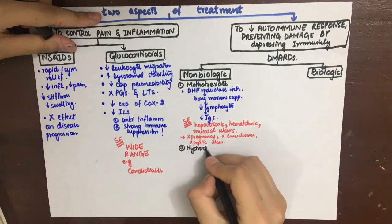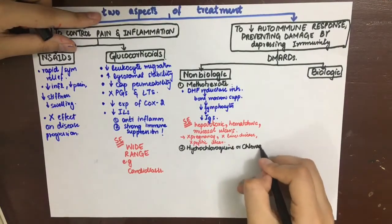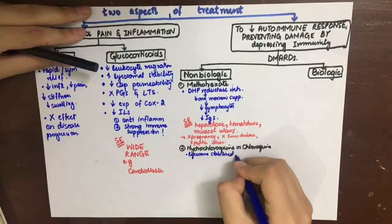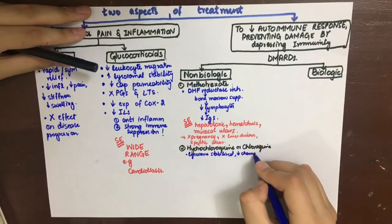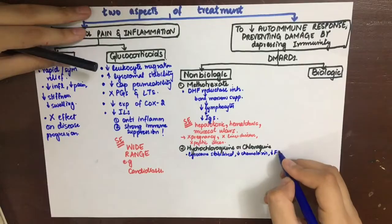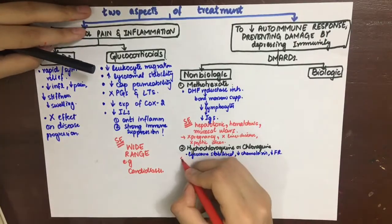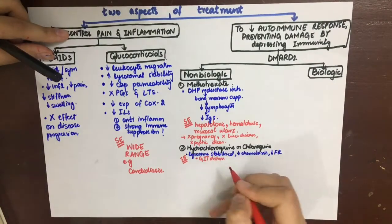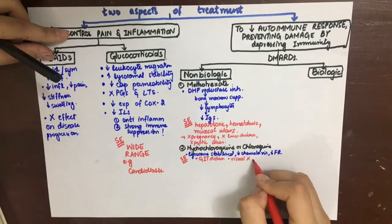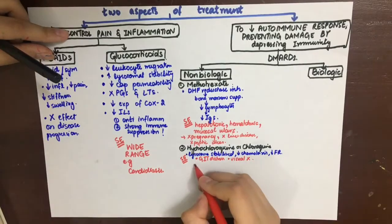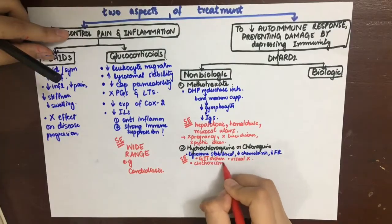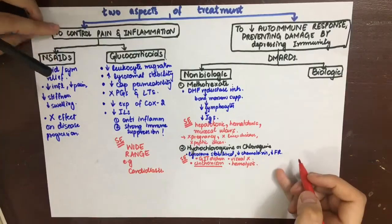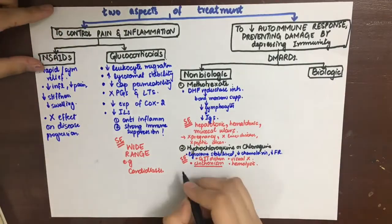Next is hydroxychloroquine or chloroquine. It stabilizes lysosomes, decreases chemotaxis, and scavenges free radicals. It is mainly used in mild disease. Side effects include GI distress and visual pathology such as corneal or retinal opacity, so a visit to an ophthalmologist once a year is recommended. Cinchonism is seen, and hemolysis is also seen in G6PD-deficient patients, similar to aspirin.